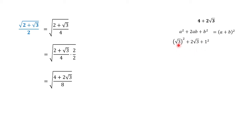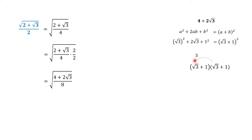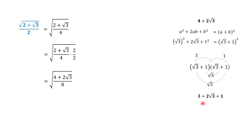So we have the squared quantity of square root of 3 plus 2 square root of 3 plus 1 squared. And if we factor this, we have the squared quantity of square root of 3 plus 1. Let us check this using the FOIL method: square root of 3 times square root of 3 is positive 3, 1 times 1 is 1, 1 times square root of 3 is square root of 3, and square root of 3 times 1 is square root of 3. So we have 3 plus 2 square root of 3 plus 1, which simplifies to 4 plus 2 square root of 3.